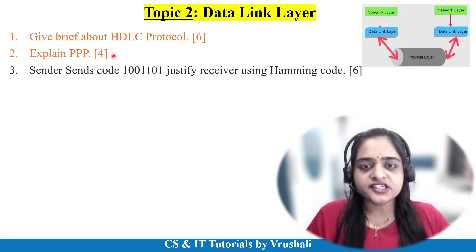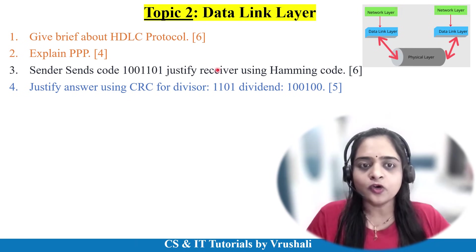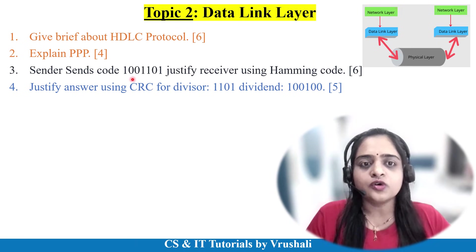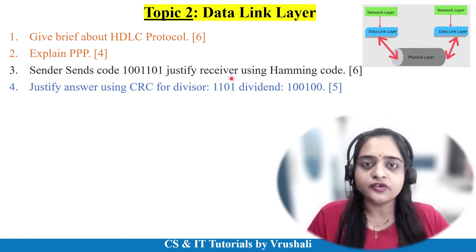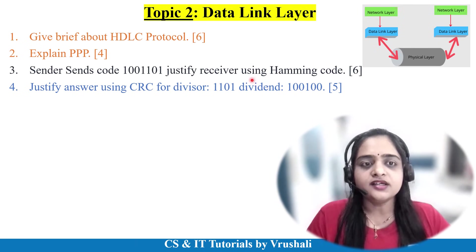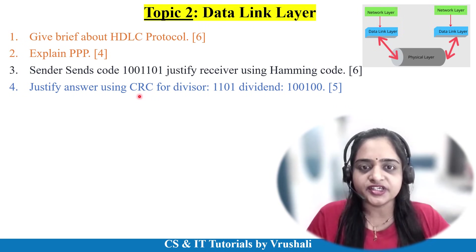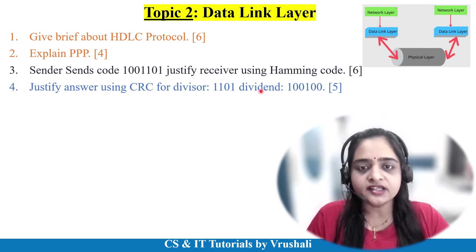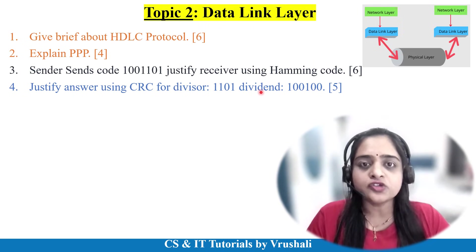The next question is based on Hamming code and CRC. A particular code is given and you have to justify the receiver using the Hamming code explanation for 6 marks, or they may ask about cyclic redundancy check where a particular divisor and dividend are given and you have to solve it for 5 marks.